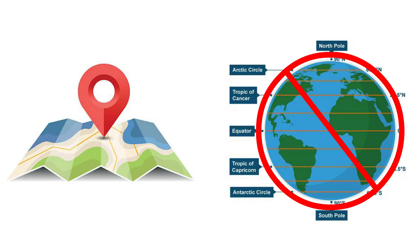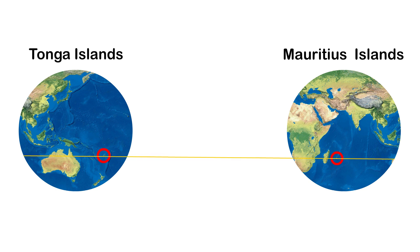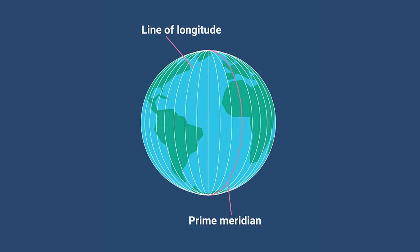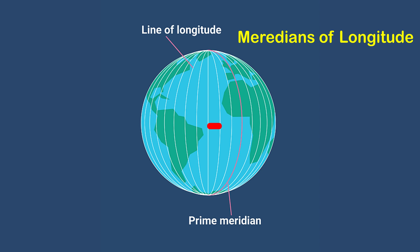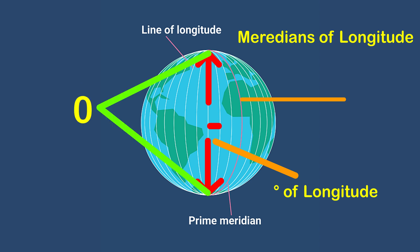To fix the position of a place it is necessary to know something more than just the latitude. For example, Tonga Islands in the Pacific Ocean and Mauritius Islands in the Indian Ocean are both situated at 20 degrees south latitude. To locate them precisely we must find out how far east or west these places are from a given line of reference running from the north pole to the south pole. These lines of reference are called meridians of longitude. The distances between them are measured in degrees of longitude; each degree is further divided into minutes and minutes into seconds. They are semicircles and the distance between them decreases steadily polewards until it becomes zero at the poles where all the meridians meet.